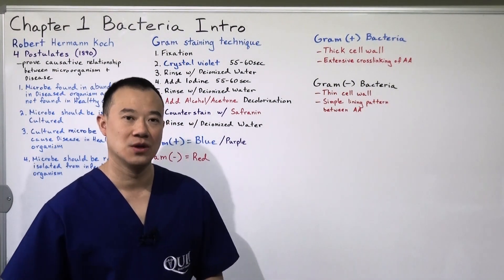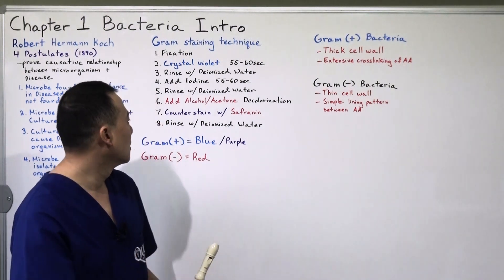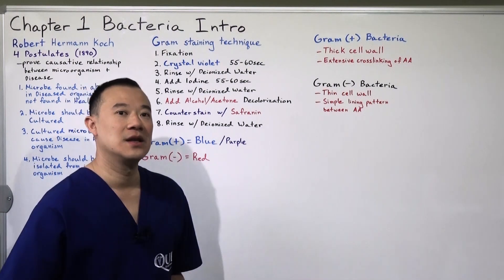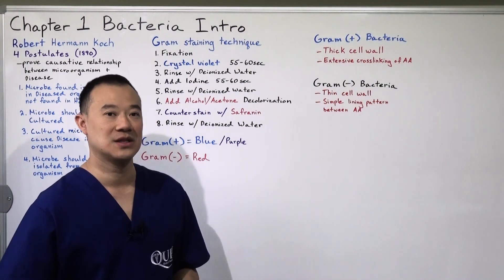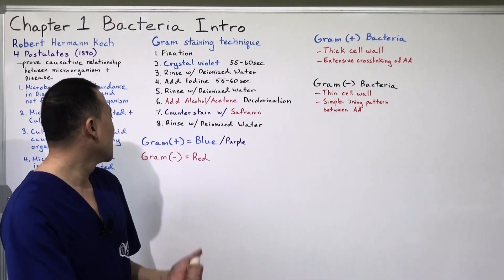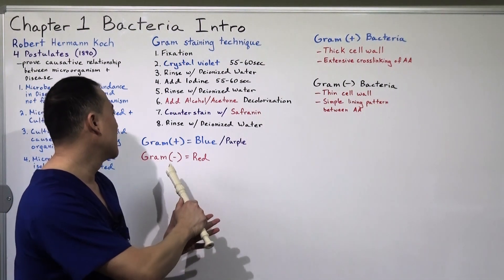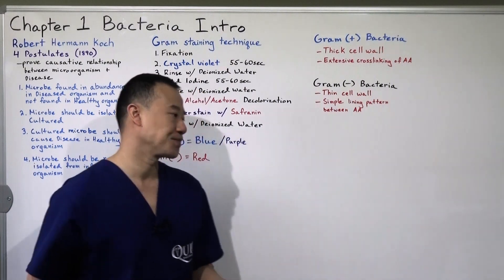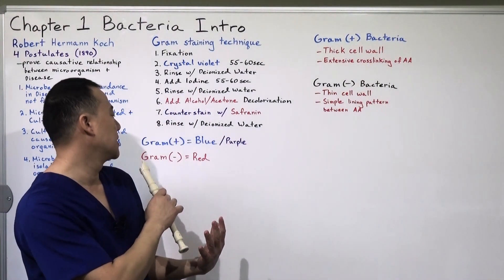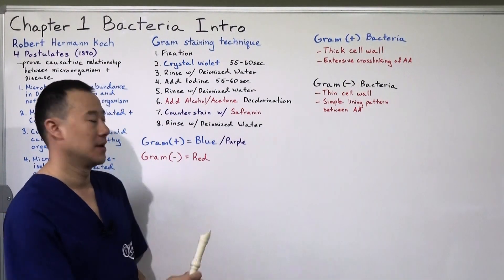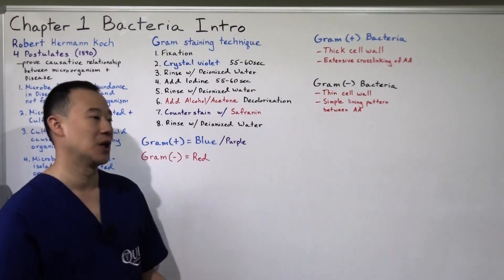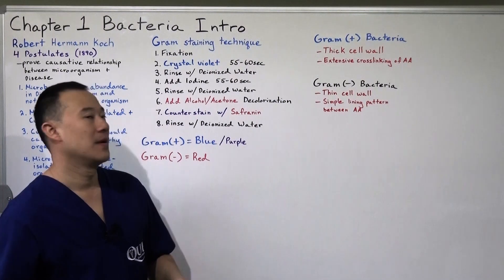Rinse with deionized water again and you look under the microscope. You put it on the microscope table, look through the microscope, see what color it is, see what types, shapes, sizes the microorganism is. Most likely it's a bacteria when we're doing gram staining. And if the bacteria shows up as blue or purple color, then the bacteria is a gram-positive bacteria. If the bacteria shows up as reddish color, pinkish color, it's a gram-negative bacteria.